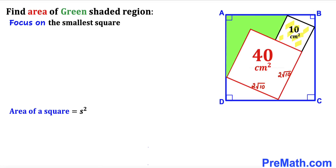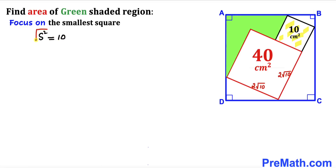Now let's focus on the smallest black square whose area is 10. Using the area of a square formula again: s² = 10. Taking the square root on both sides, the side length of this smallest black square turns out to be √10 across the board.